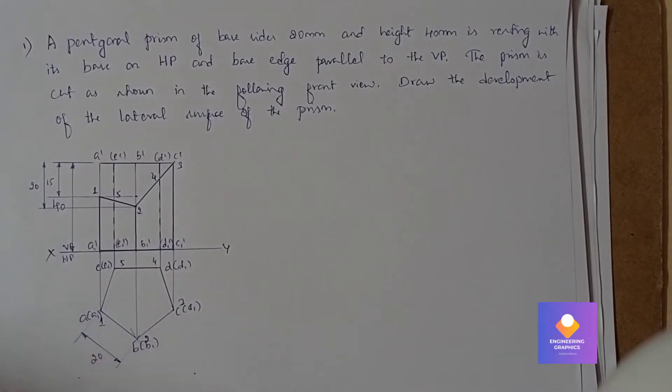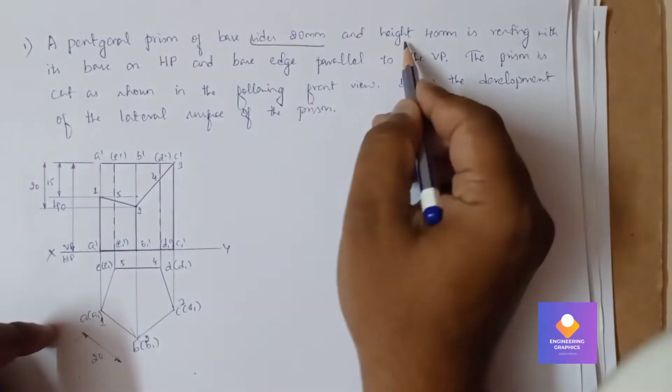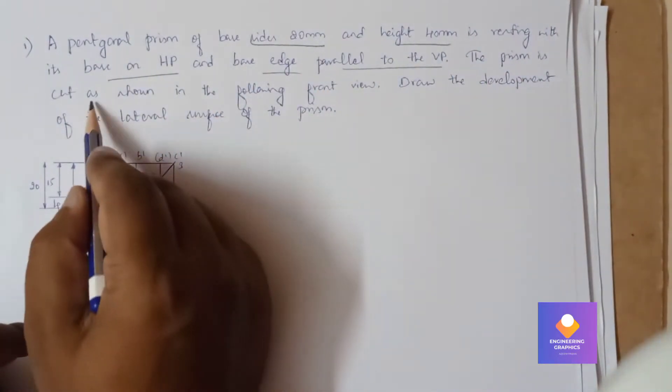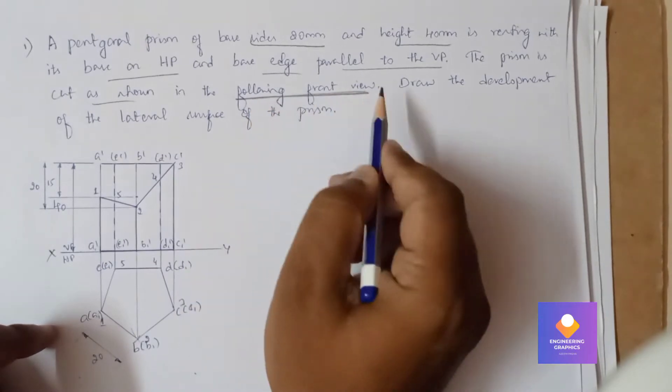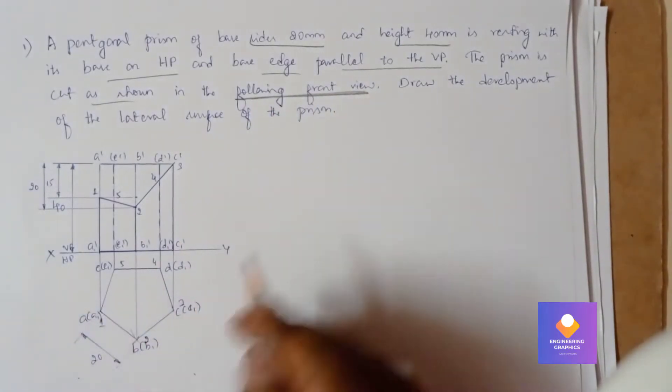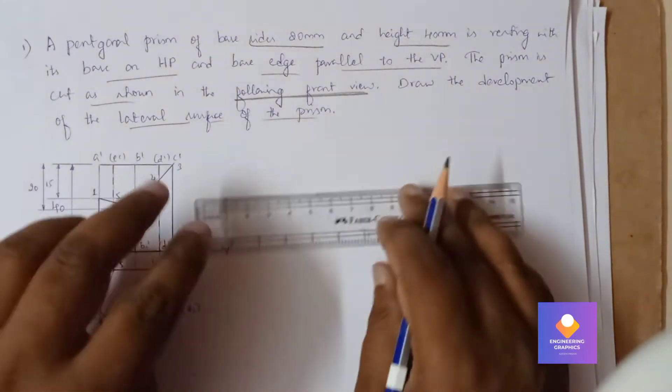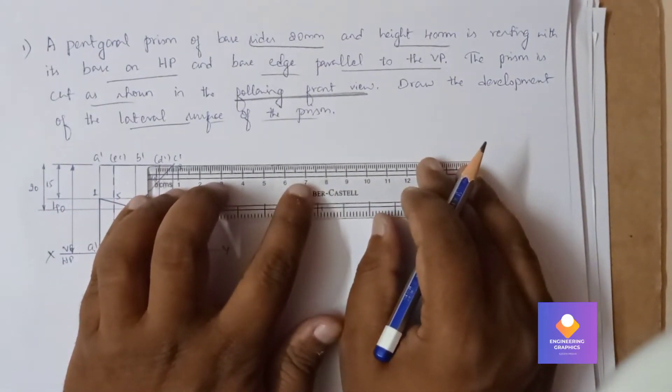In the problem you can see that a pentagonal prism of side 20mm and height 40mm is resting with its base on HP and base edges parallel to the HP. The prism is cut as shown in the following figure. Now you have to draw the development of the lateral surface of the prism. So first I will extend these lines here.